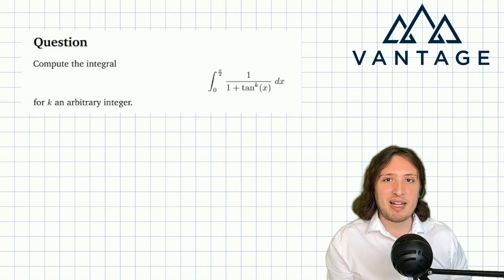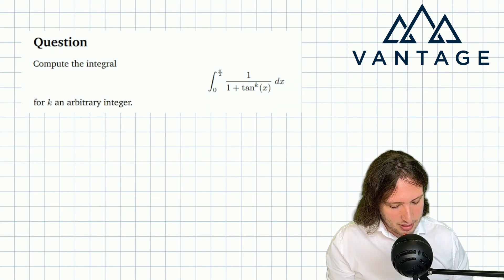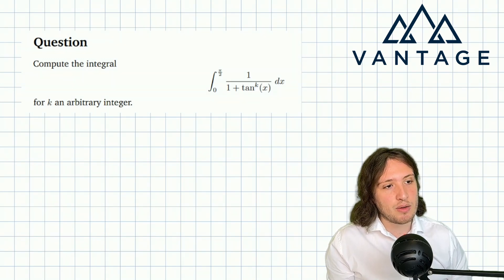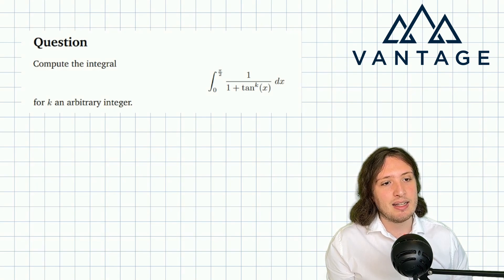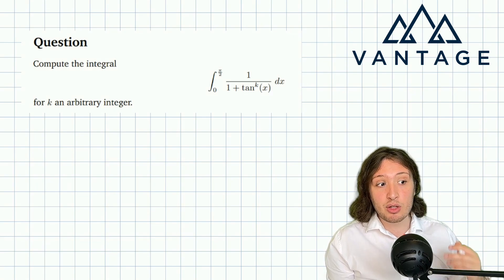So we want to think about the integral one over one plus tan to the k x, where k is an arbitrary integer. I guess we've got two choices: either we can start by doing some simple cases.